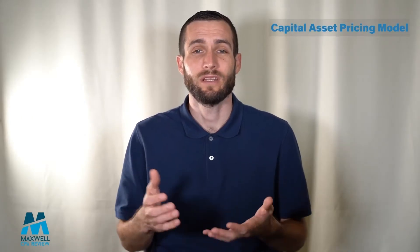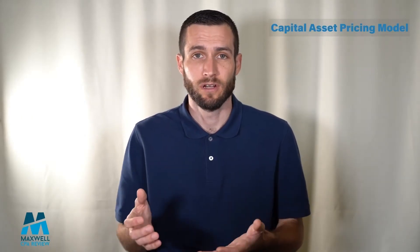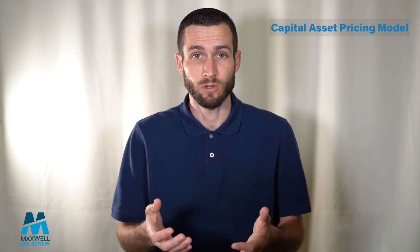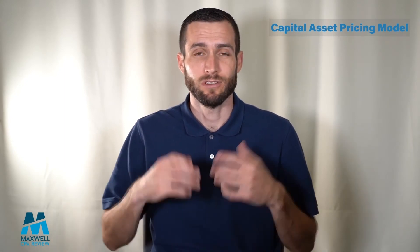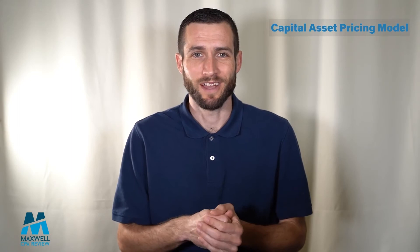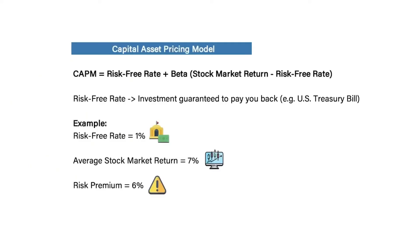When talking about the expected rate of return, there's a common formula that we use, which is the capital asset pricing model. The formula is the risk-free rate of an investment plus the beta of a stock times the difference between the overall stock market return and the risk-free rate.